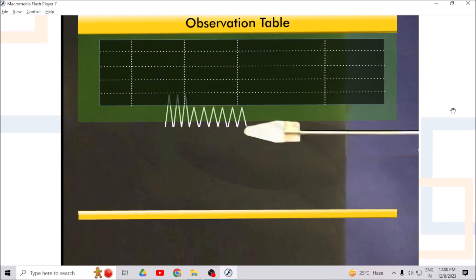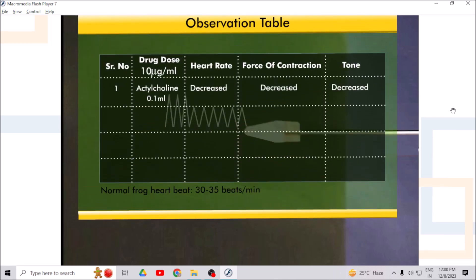Repeat the same procedure by injecting 0.2, 0.3, and 0.4 ml of acetylcholine. Allow a time gap of 5 minutes between two successive doses to wear off the effect of the earlier dose.